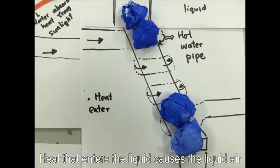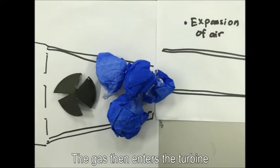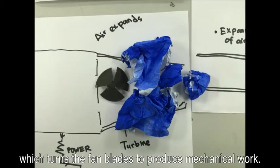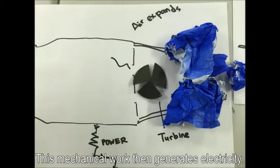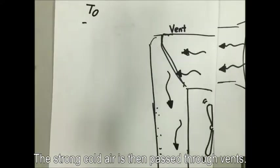Heat that enters the liquid causes the liquid air to expand into gas. The gas then enters the turbine which turns the fan blades to produce mechanical work. This mechanical work then generates electricity. The strong cold air is then passed through vents.